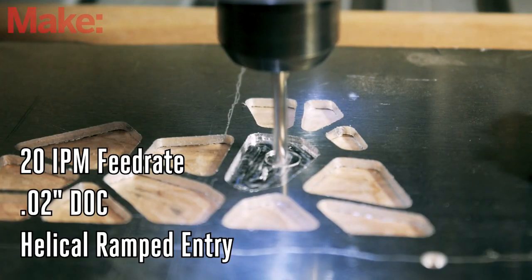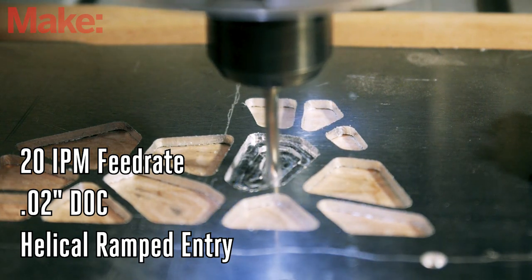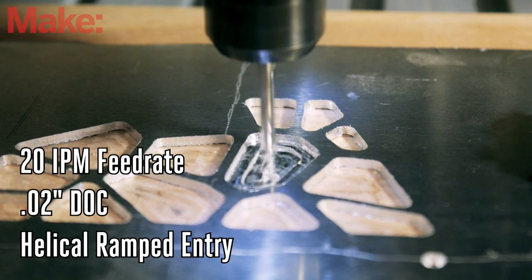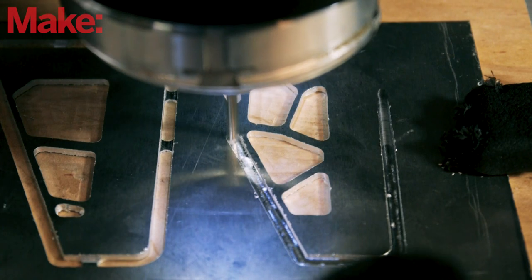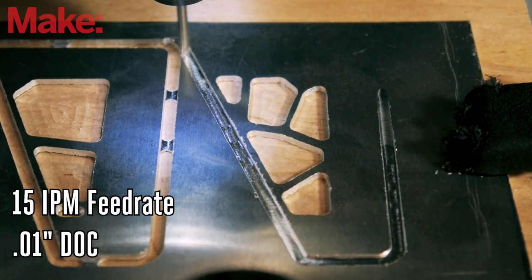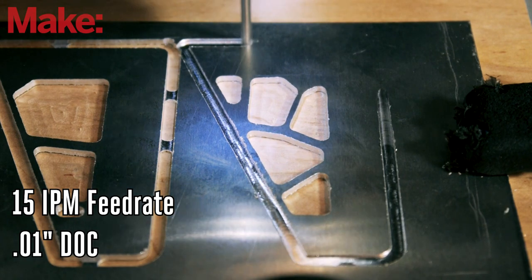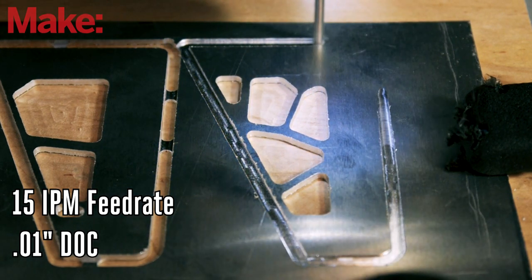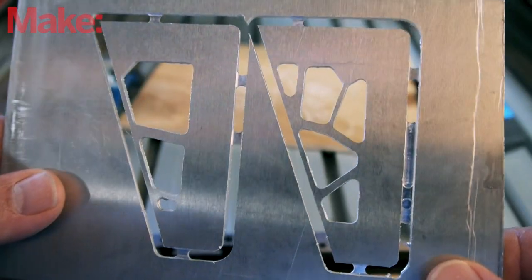For the pocket operations, I'm using a 20 inches per minute feed rate and a 0.02 inch depth of cut with a helical ramped entry. For the contour cuts, I'm slowing down to 15 inches per minute and a 0.01 inch depth of cut. The material is fairly thin, so even with these shallow cuts the runtime isn't too long.